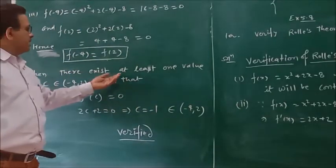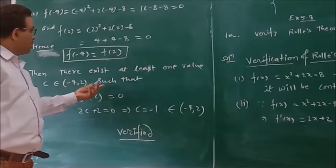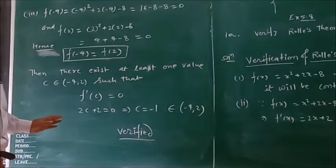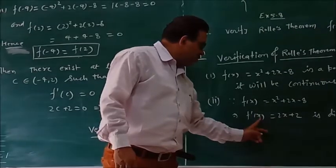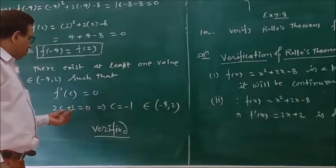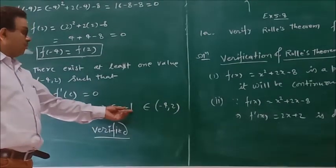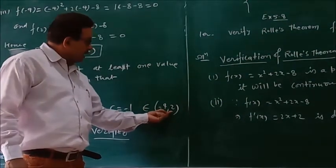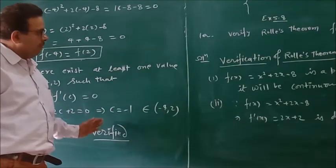Then there exists at least one value c in open interval minus 4 to 2, such that f dash c equals 0. After this, integrating and solving, 2c equals minus 2, and the value of c equals minus 1. This value belongs to the interval, hence Roll's Theorem is verified.